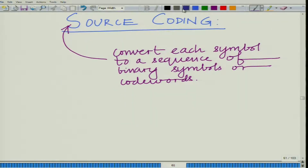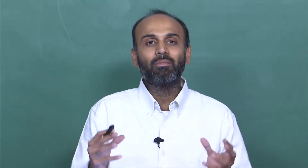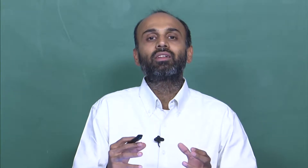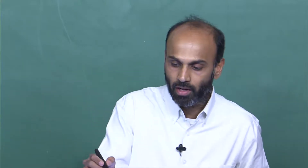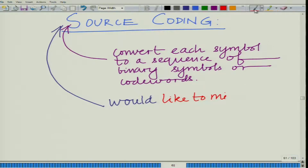Our aim in source coding is data compression — we want to minimize the number of bits. The smaller the number of bits, the easier it is to communicate over a channel. In particular, a useful metric is to minimize the average number of bits used to represent each symbol. Rather than looking at each symbol in isolation, we would like to minimize the average number of bits used to represent a symbol.